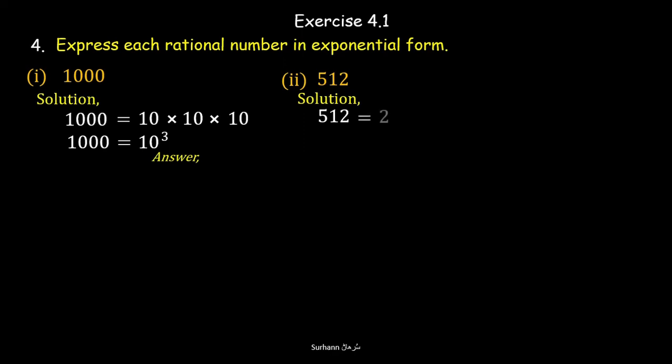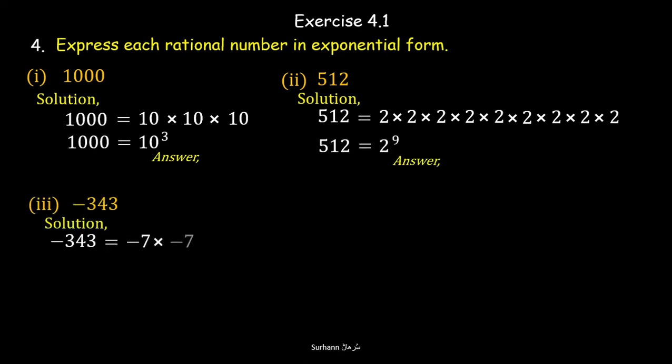See problem number 2: 512. When you find the factors of 512, you will get 2 multiplied 9 times. So the exponential form of 512 is 2 to the power 9. Similarly, solve all other problems by yourself. They are so easy.